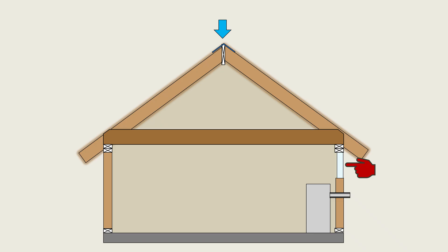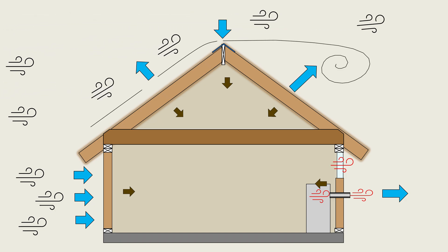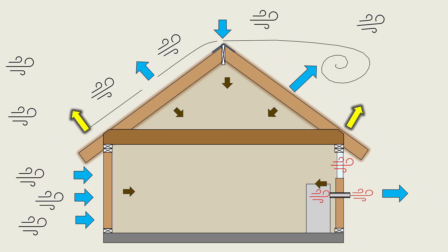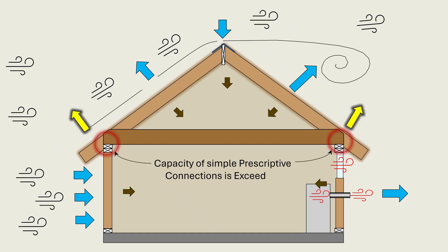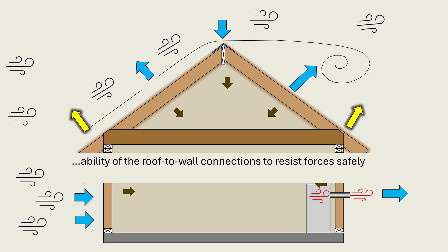On the other hand, when dominant openings are located on the leeward side, a reduction in internal pressure may occur as air is sucked out into the low-pressure leeward exterior. Although the external roof surface still experiences suction pulling outward, the lower internal pressure means the outward push from inside is diminished, leading to reduced net uplift compared to the positive internal pressure case. These pressure demands are transferred through the roof sheathing to rafters or trusses and ultimately as uplift forces to the supporting walls. As wind speed increases, the resulting uplift forces can increase rapidly, often reaching levels where the capacity of simple prescriptive connections is exceeded. Wind uplift design in residential construction is fundamentally a connection problem, governed by the ability of roof-to-wall connections to resist forces safely throughout the load path.